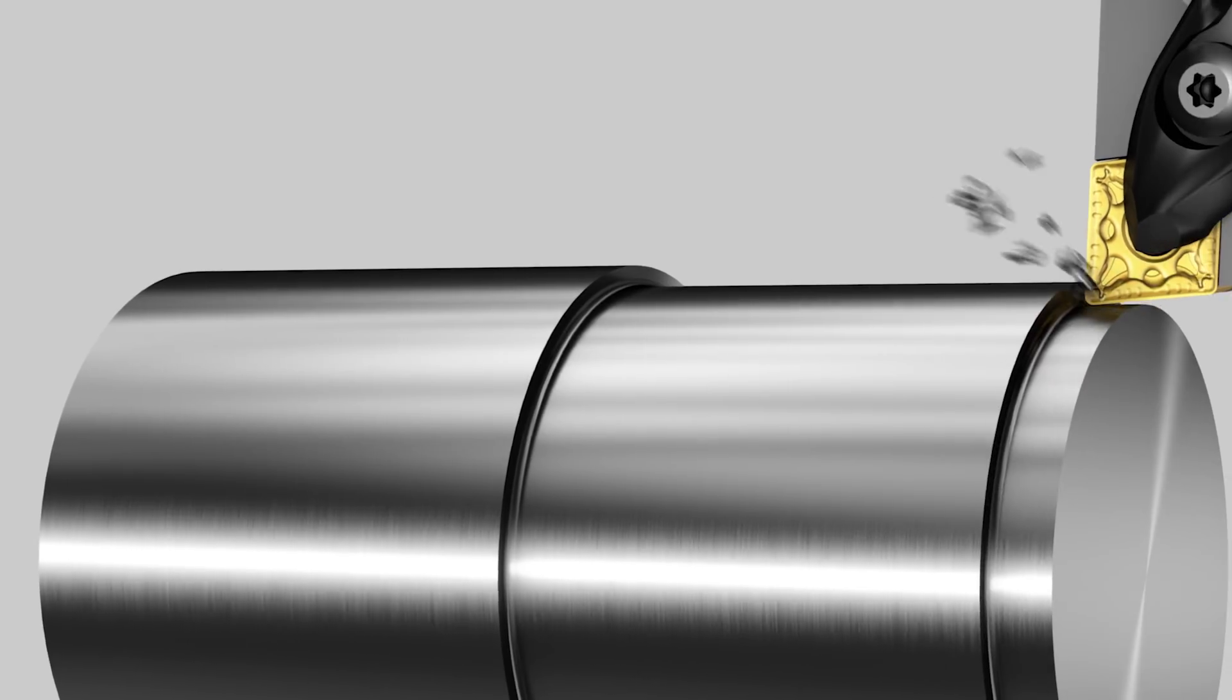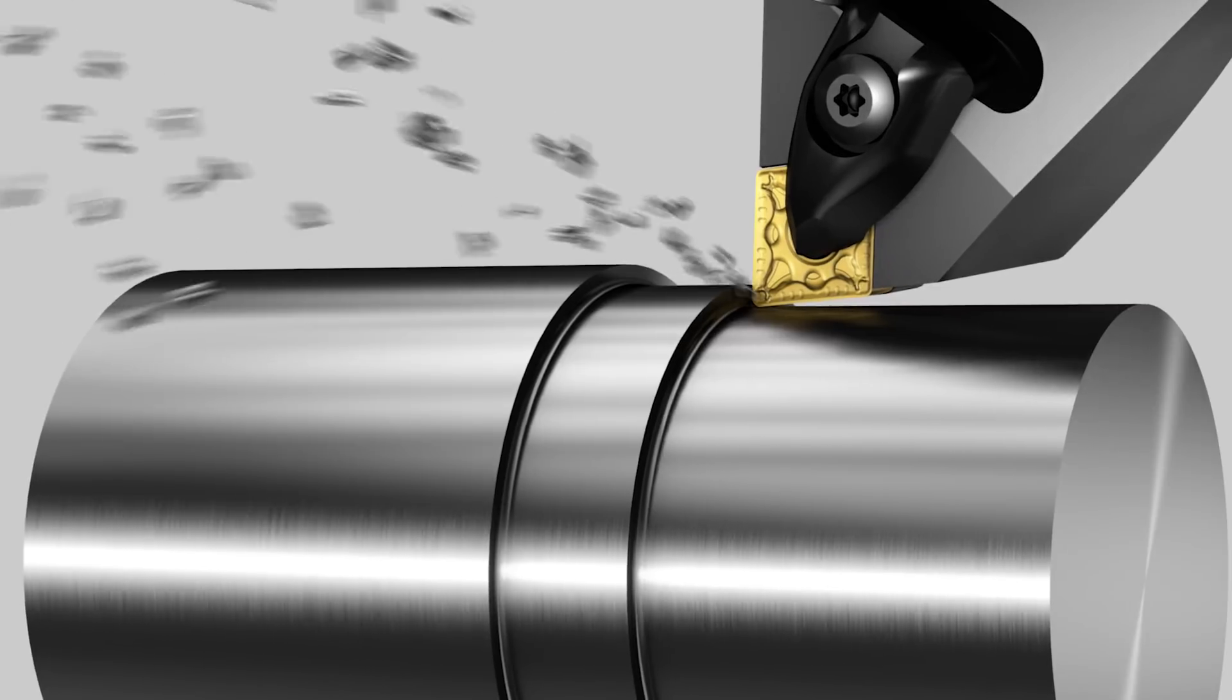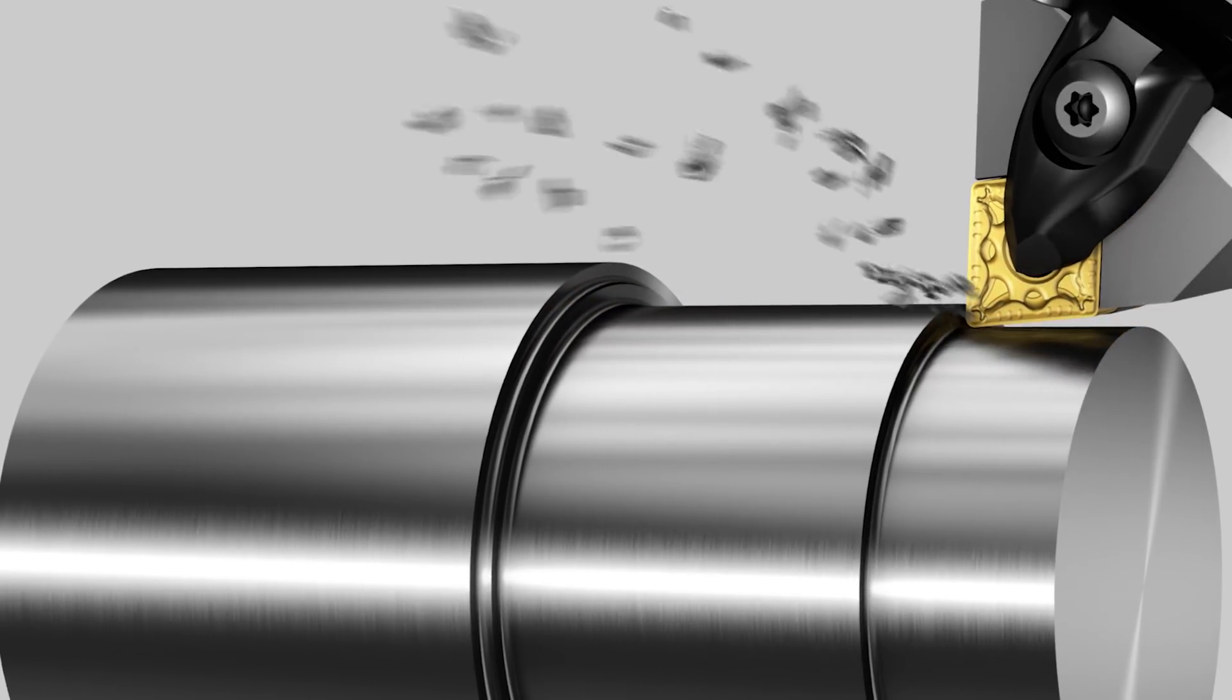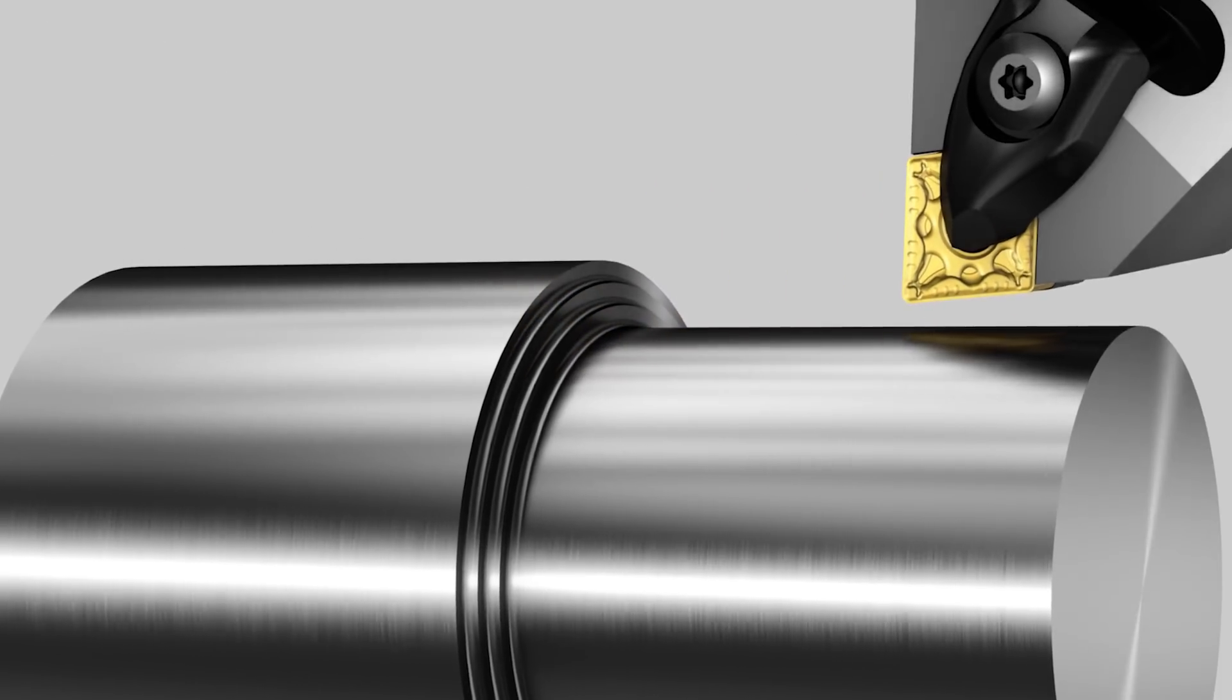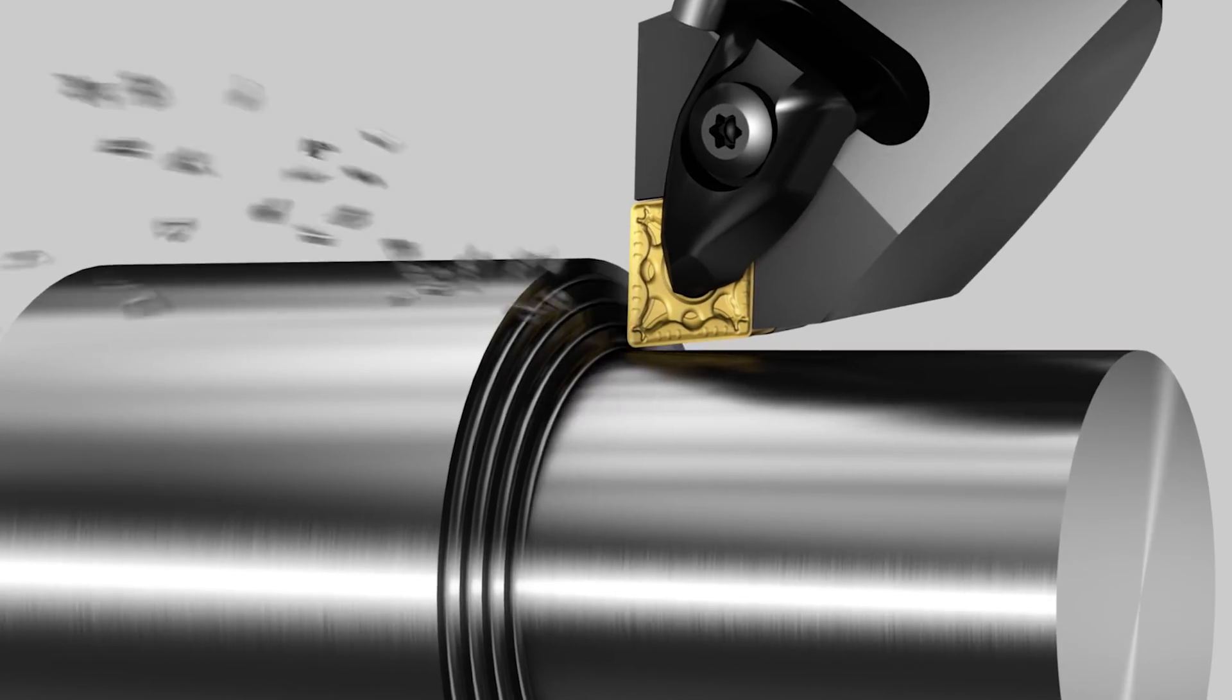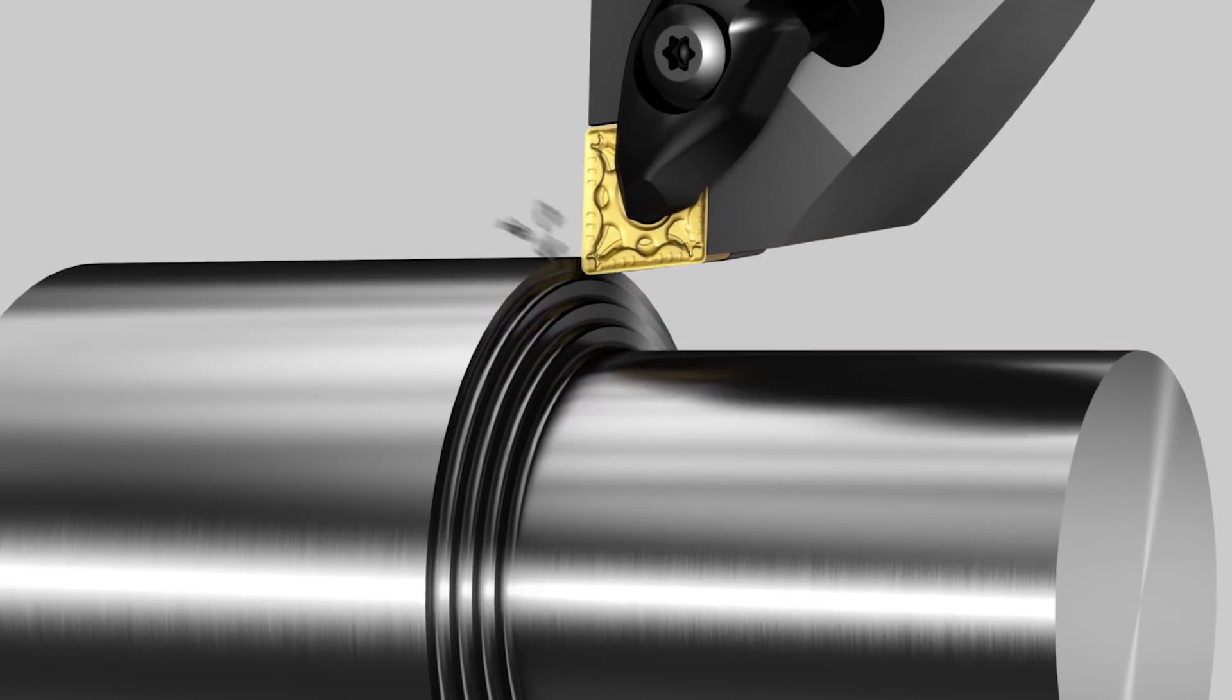To avoid chip jamming in conventional turning, turn towards the shoulder and stop before the dimension of the shoulder. Maintain the same feed rate for four horizontal cuts. The final vertical cut should be done from outer diameter towards the inner diameter.